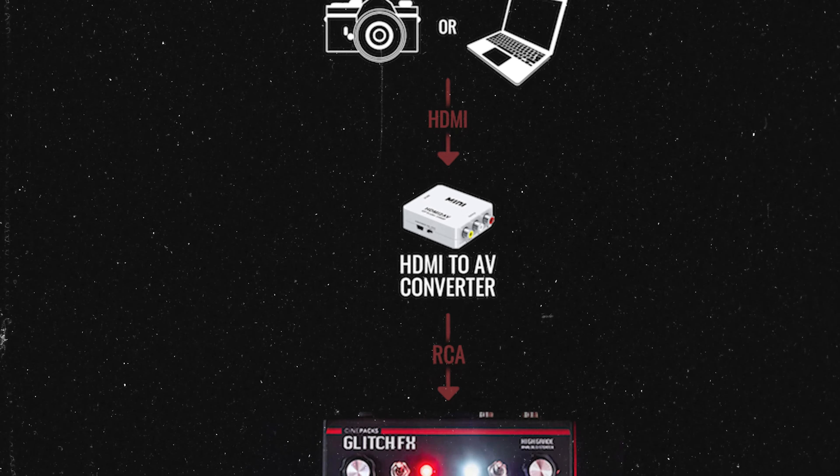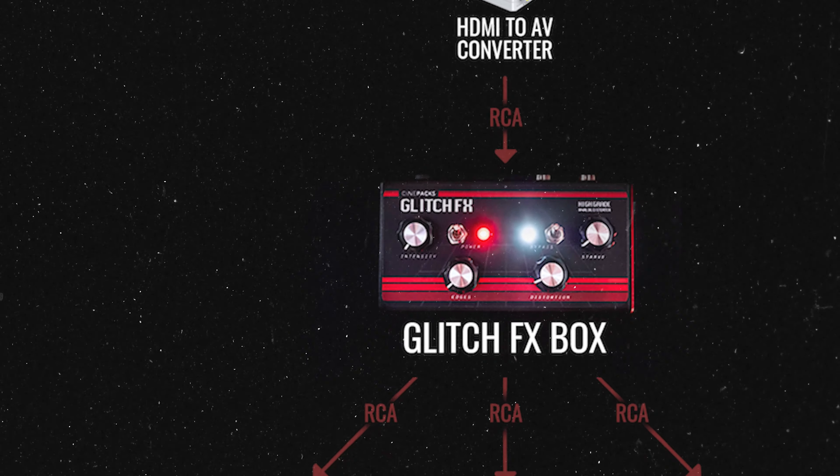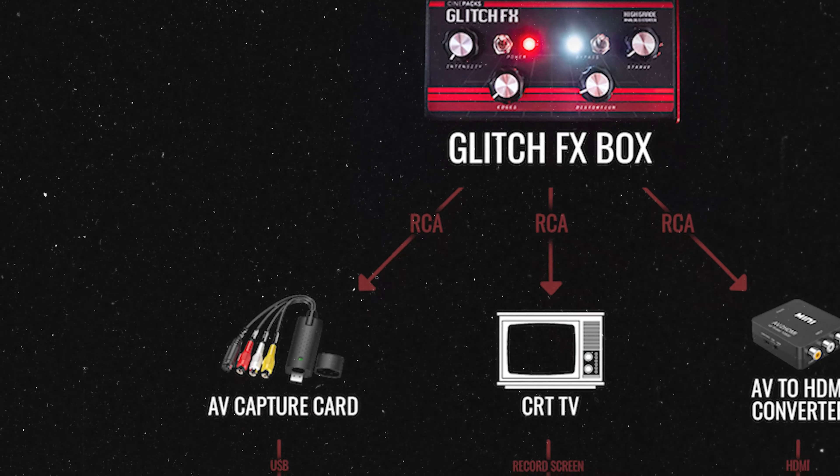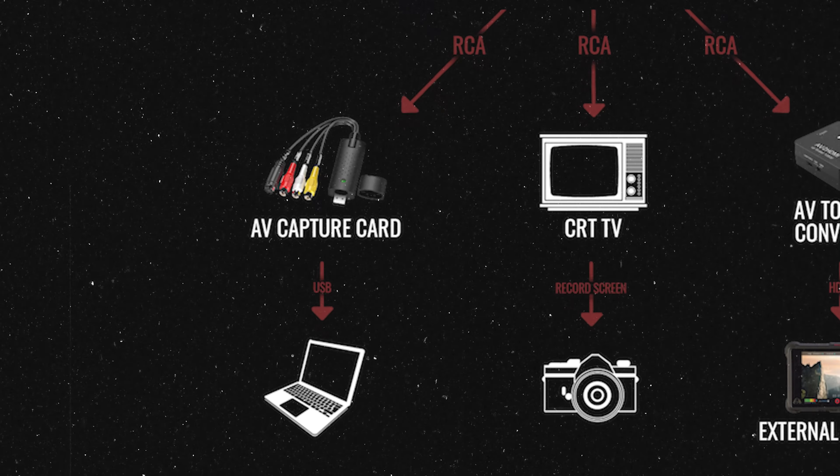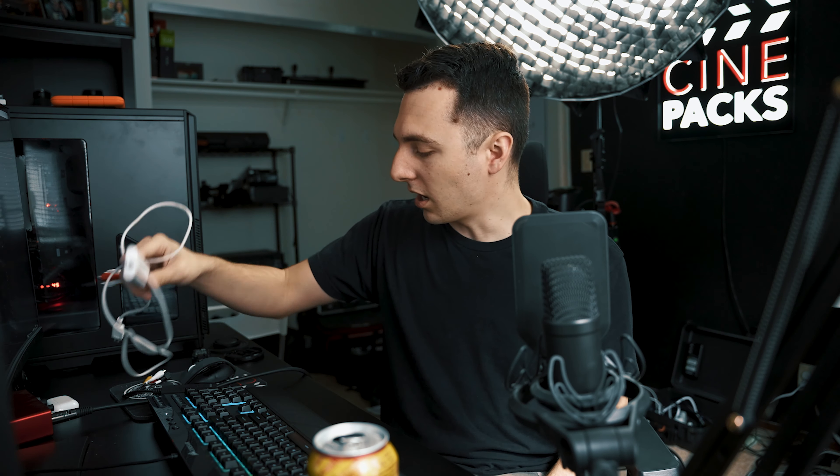Now I'm going to show you two other ways you can capture the footage. The CRT TV gives the best results and pushes your image the furthest, but it takes a lot of setup. This next setup goes straight into your computer without needing a camera recording the TV. You'll need a video capture card — take your video source through the HDMI to AV converter, into the glitch box, then the output goes into an AV capture card plugged directly into your computer. You capture it using OBS or the software that comes with the capture card. One of my favorites is the Elgato Video Capture.